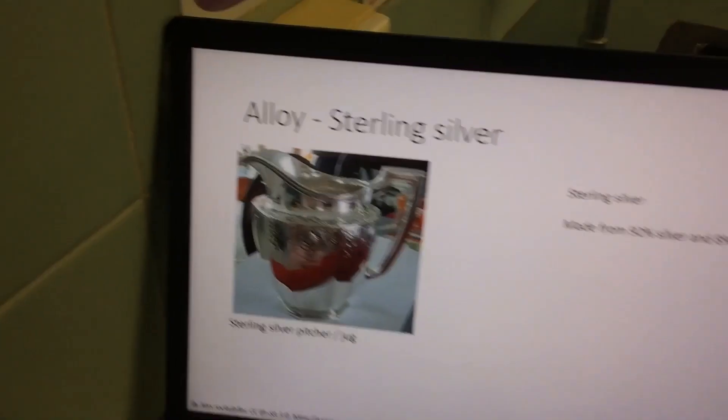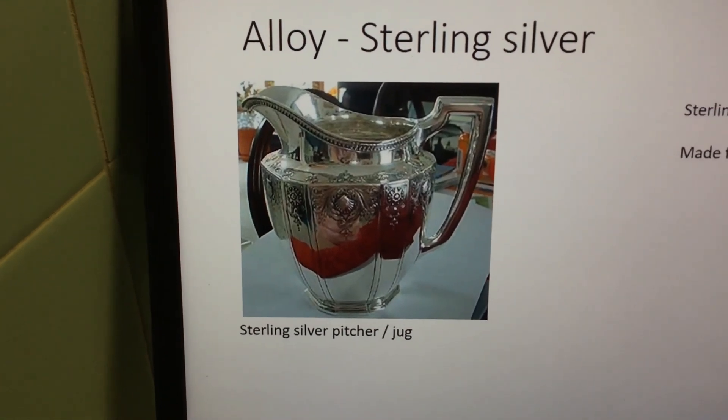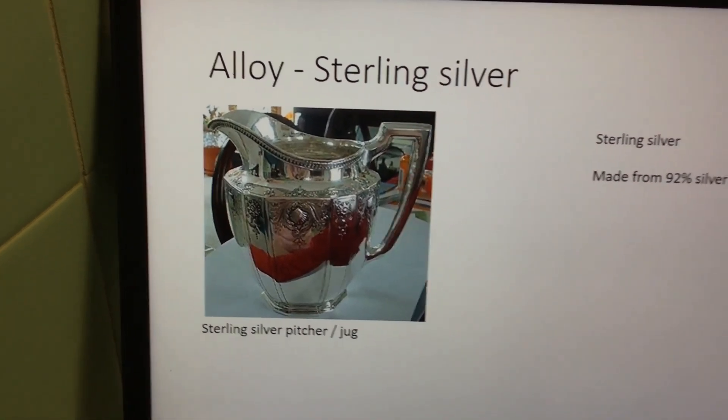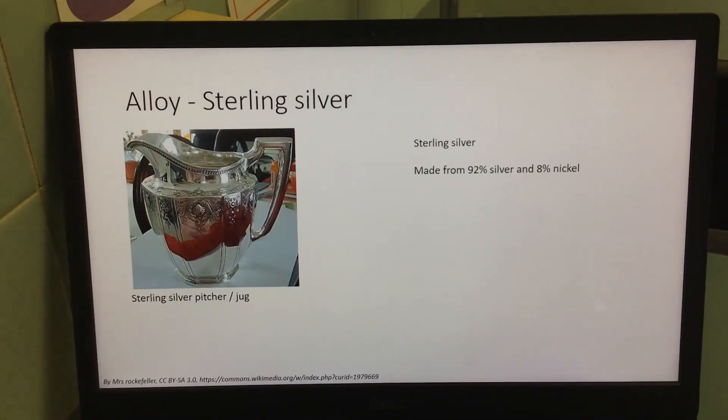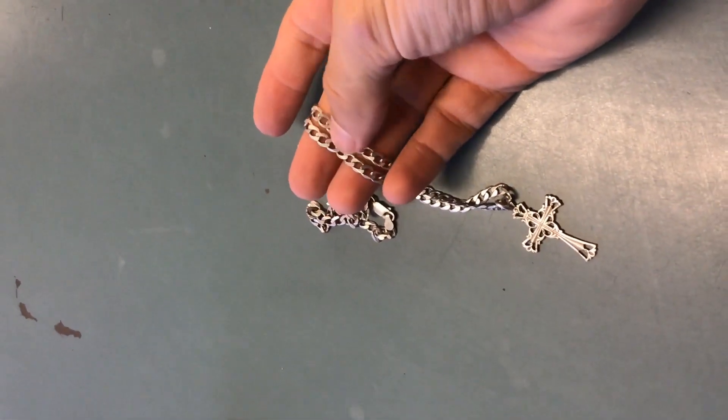Well, sterling silver is another example of an alloy. So here we can see another object that's made from sterling silver. It's a jug or a pitcher. And sterling silver is made up of 92% silver and 8% nickel. So this object over here is made up of 92% silver and 8% nickel.